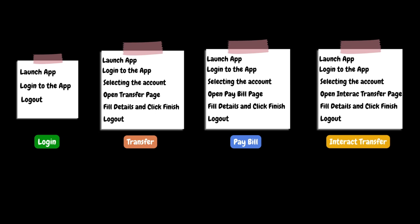The final functionality in our list is interact transfer, also called email transfer. This functionality is used when the user wants to send money to a registered email address. The first three steps are the same as transfer and pay bill: launch, login, and select account. After that, the user opens the interact transfer page, fills all the necessary information, clicks finish, and finally logs out from the application.